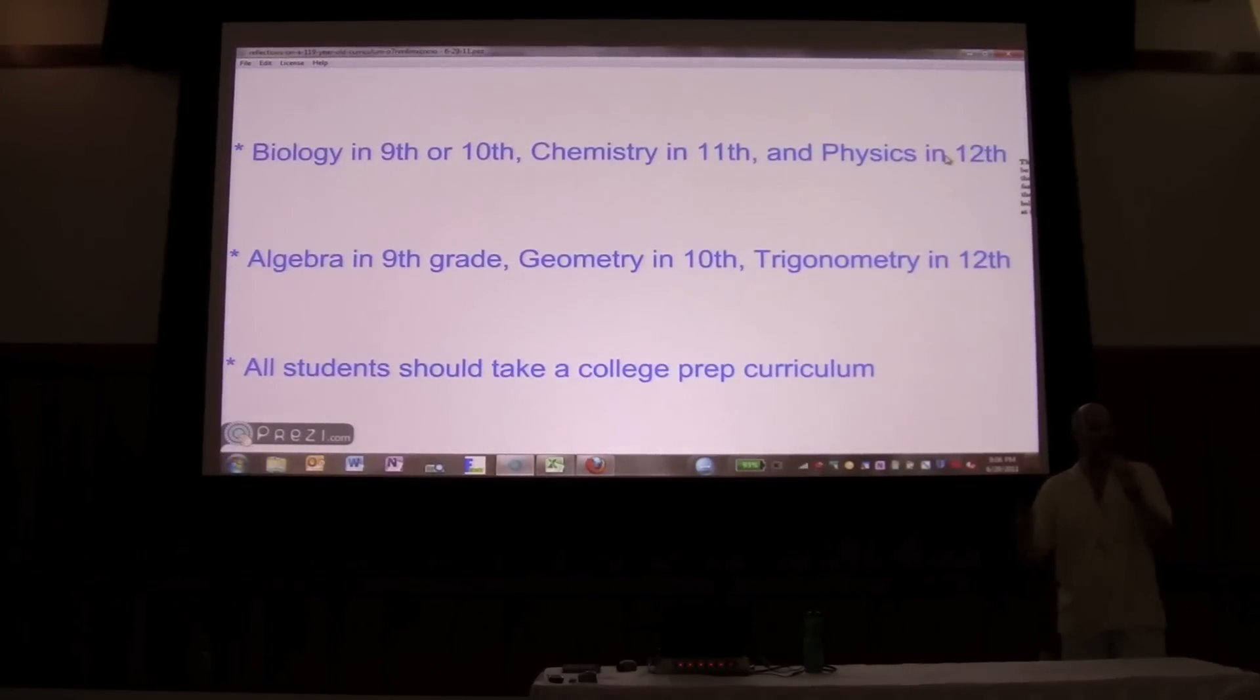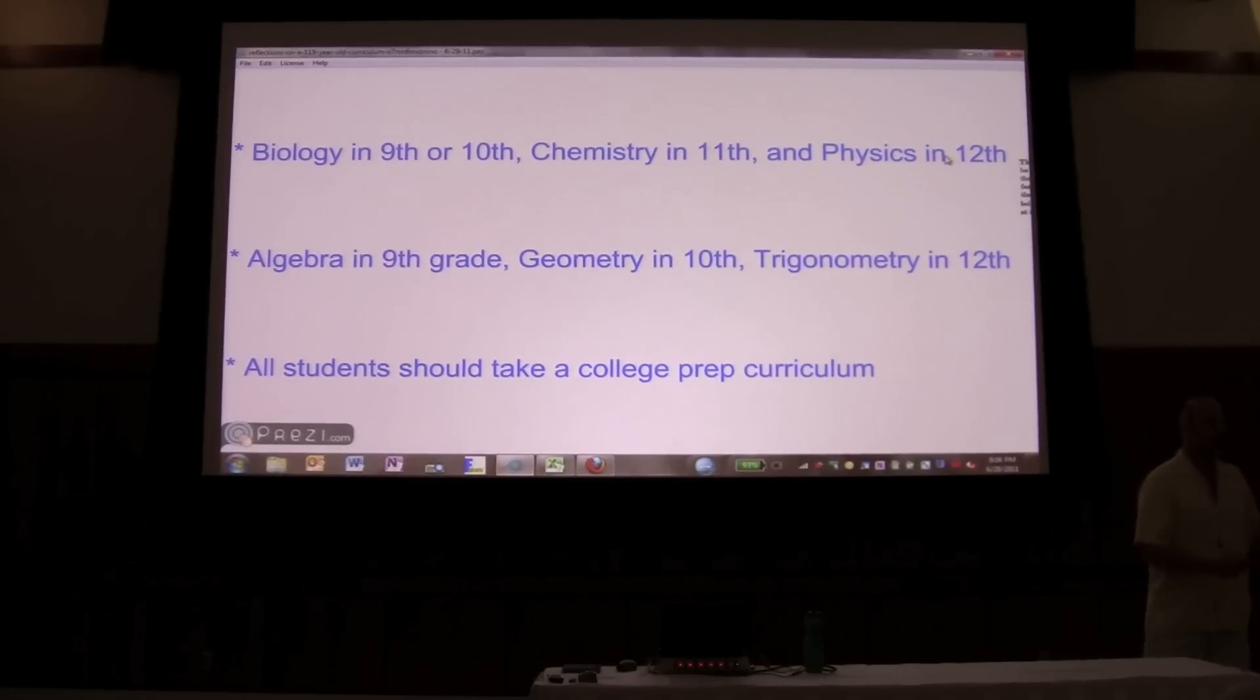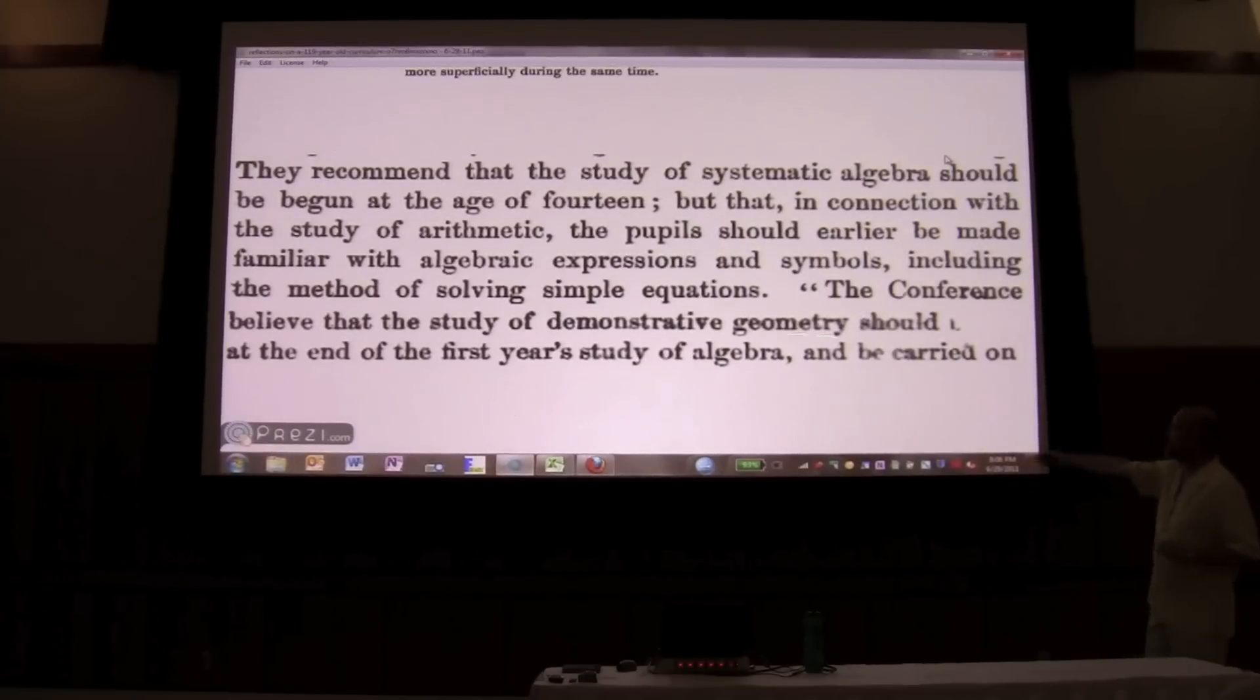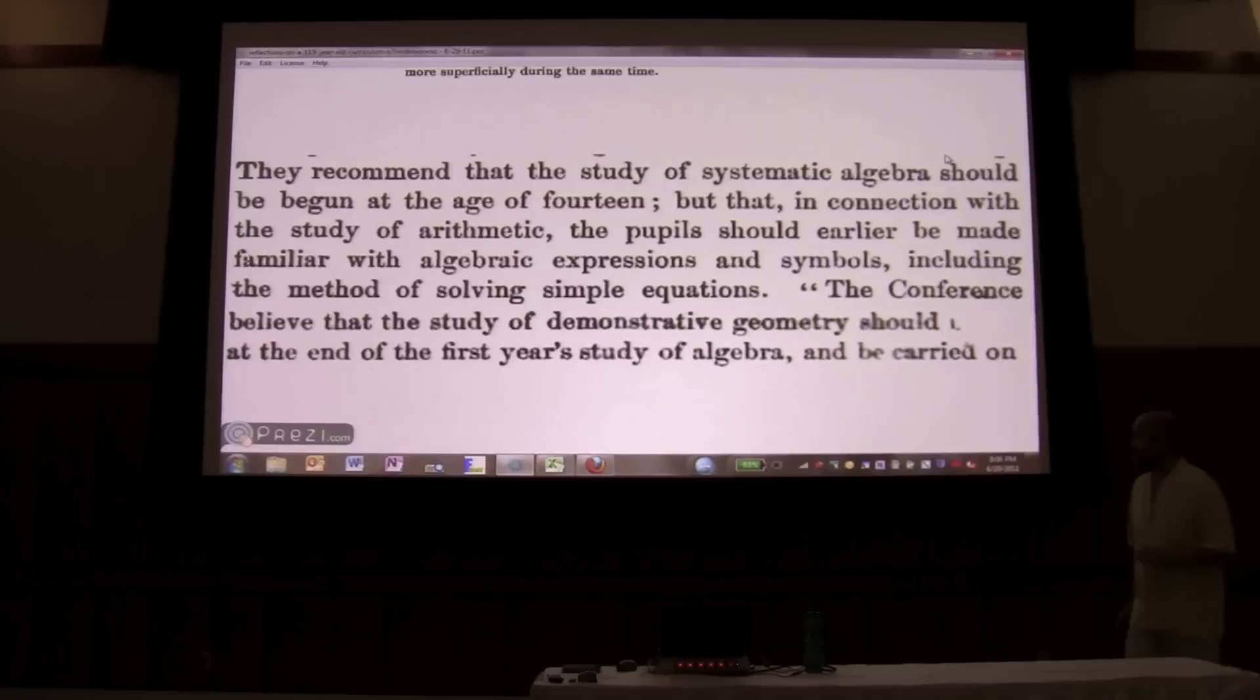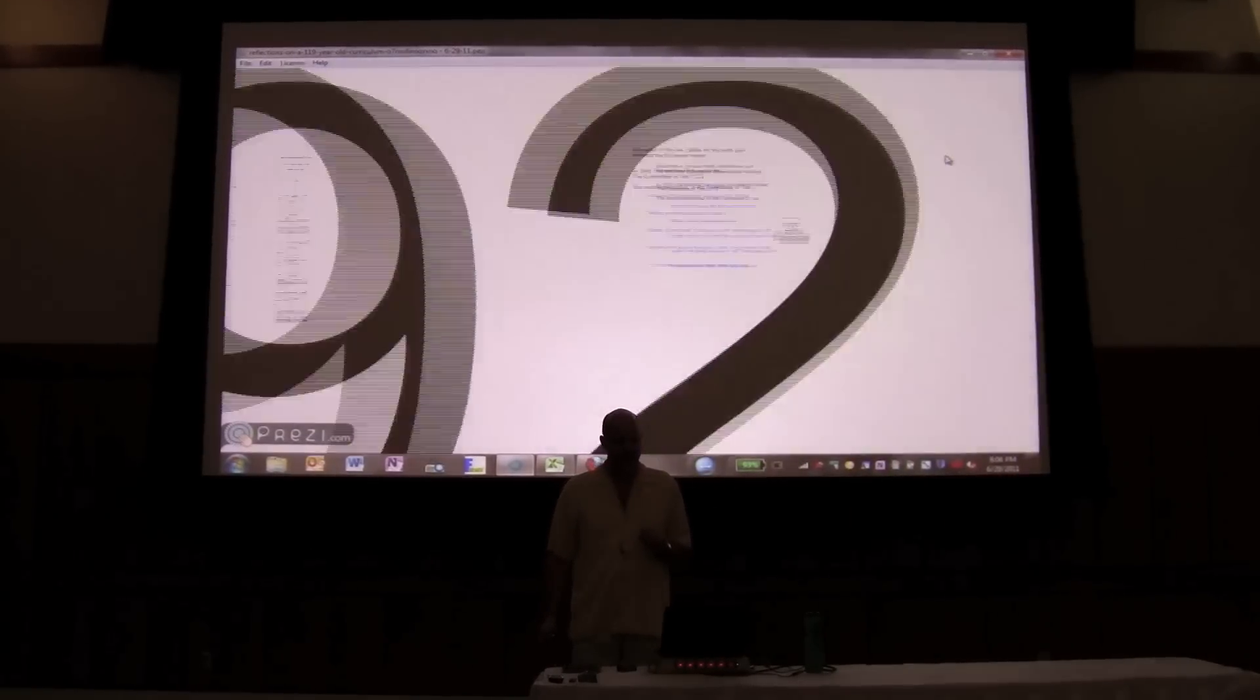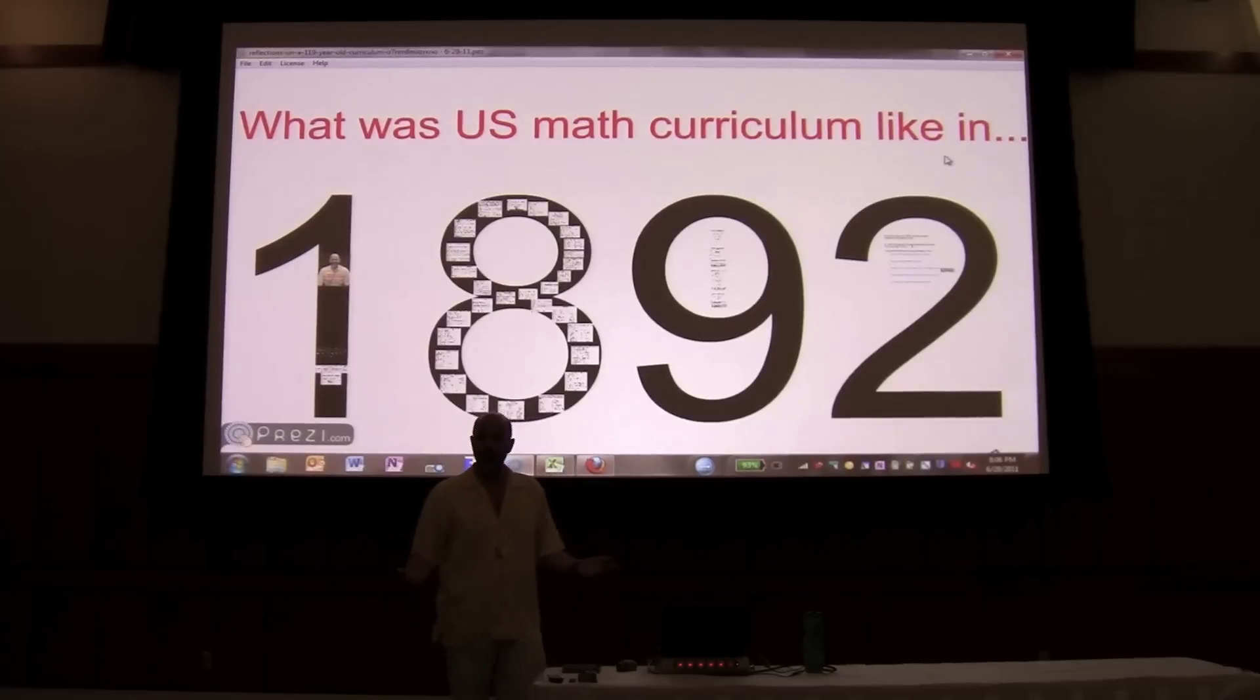And have you ever wondered why it is that we study algebra in the 9th grade, take a timeout, do geometry, and then go back to algebra 2? Because 119 years ago, 10 men said that's what we should do. The conference believed that the study of demonstrative geometry should come at the end of the first year's study of algebra. And that's why we do this. And that all students should take college prep.